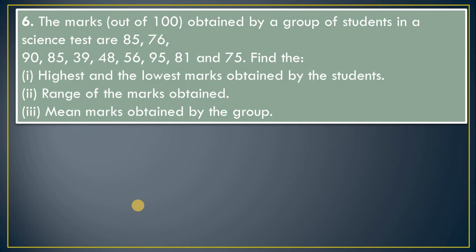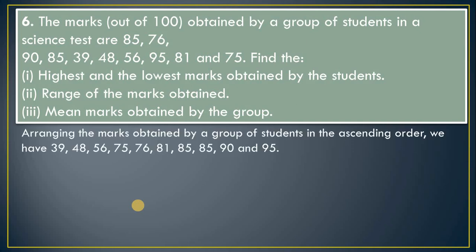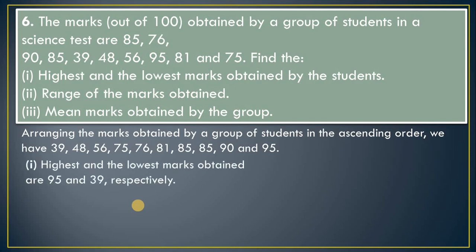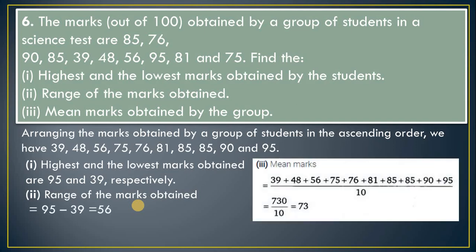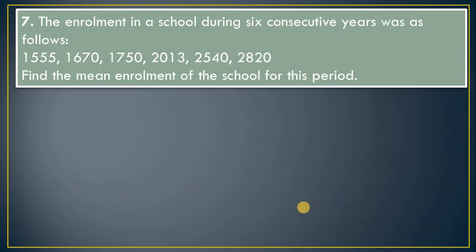Question 6: Marks obtained by a group of students are given. Arrange marks in ascending order. Highest is 95, lowest is 39, so range = 95 − 39 = 56. Calculate mean: addition of all values divided by number of observations (10) gives the answer 73.